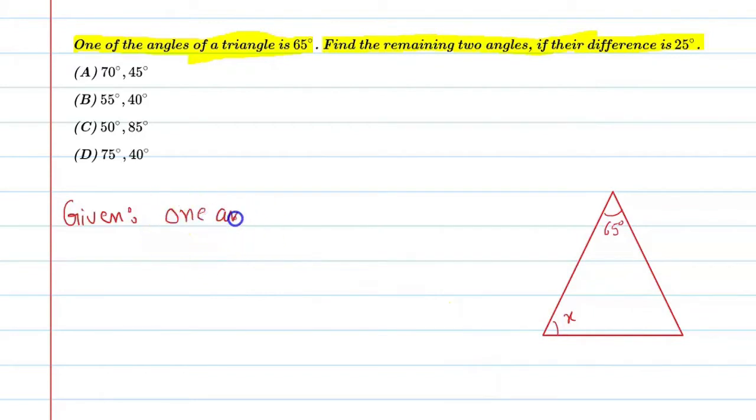65 degrees. And this angle is x. And this another angle means, if you put the difference between the two angles, the value is 25 degrees. So you can see that the second angle is x plus 25.